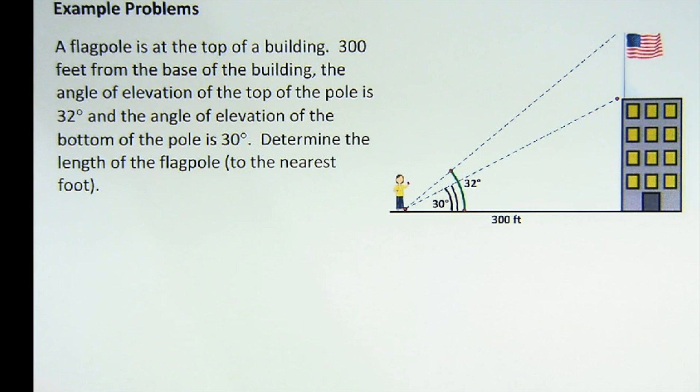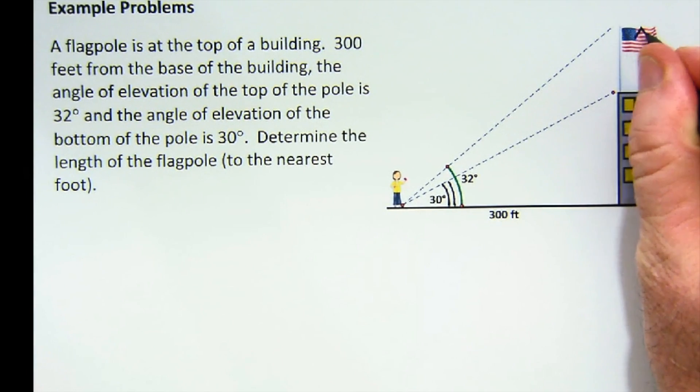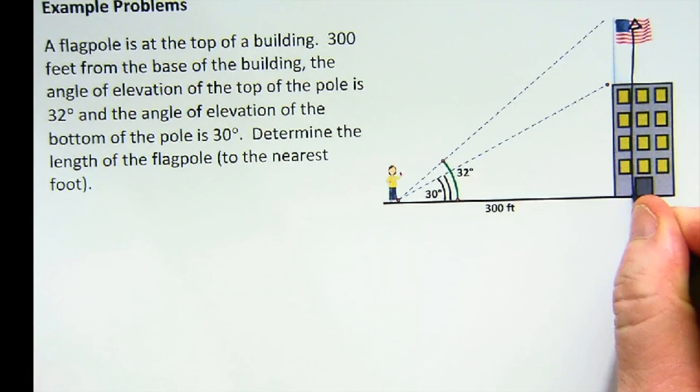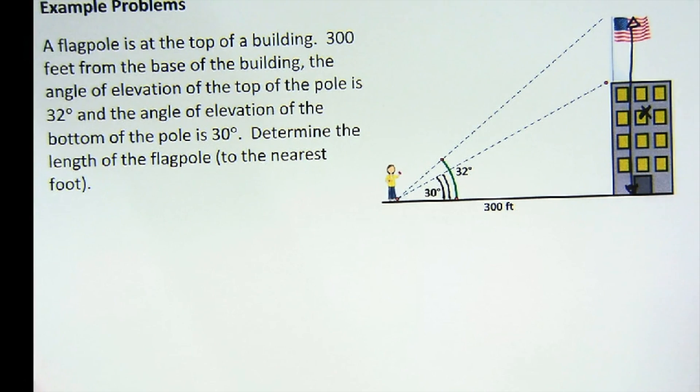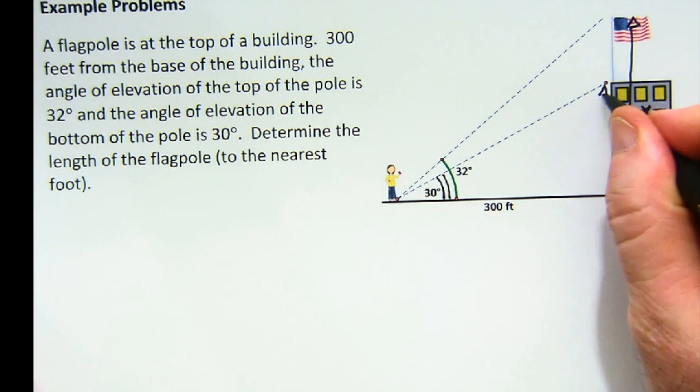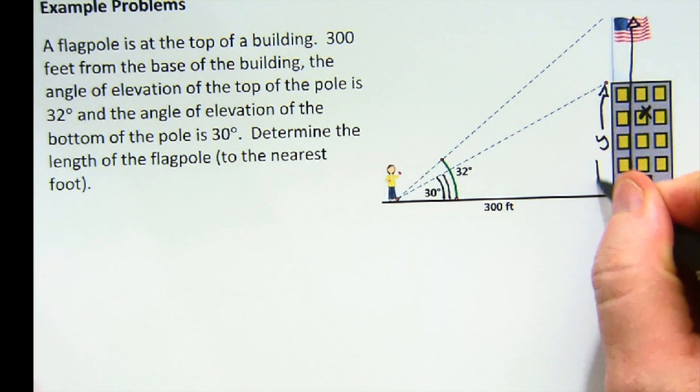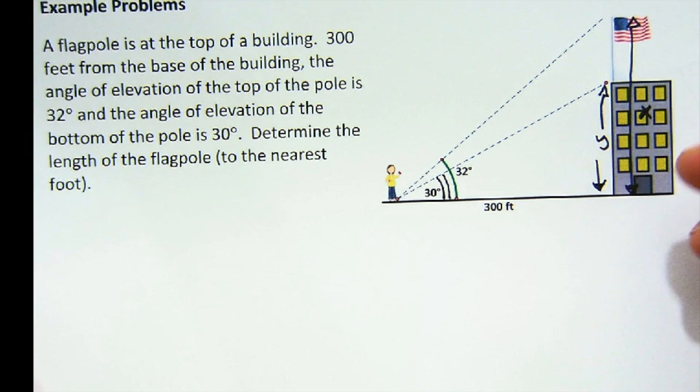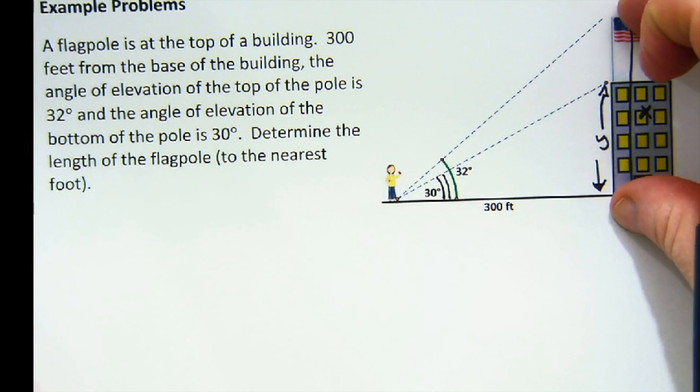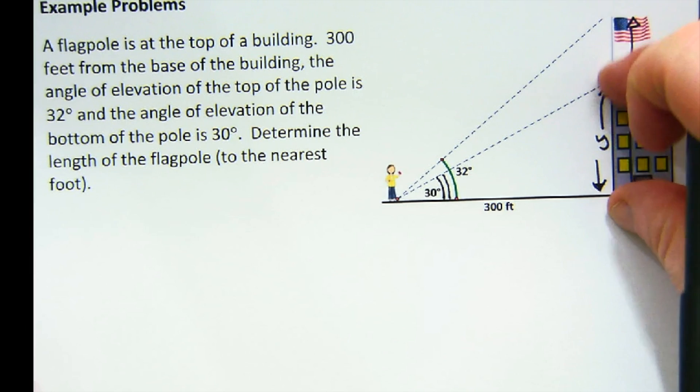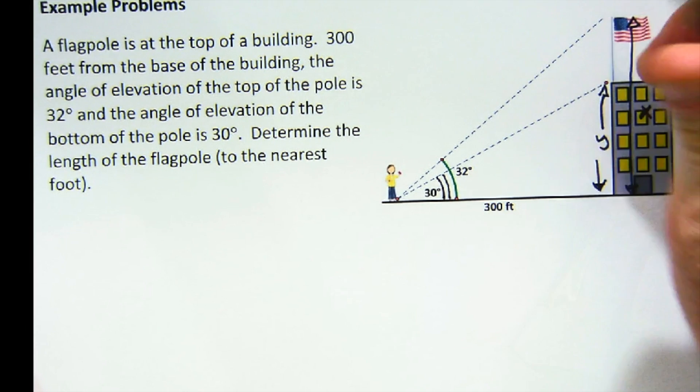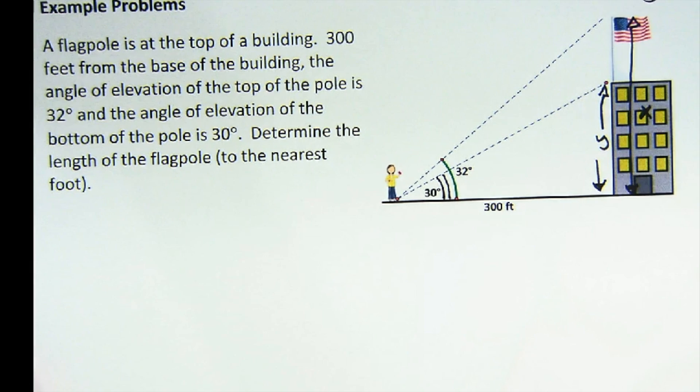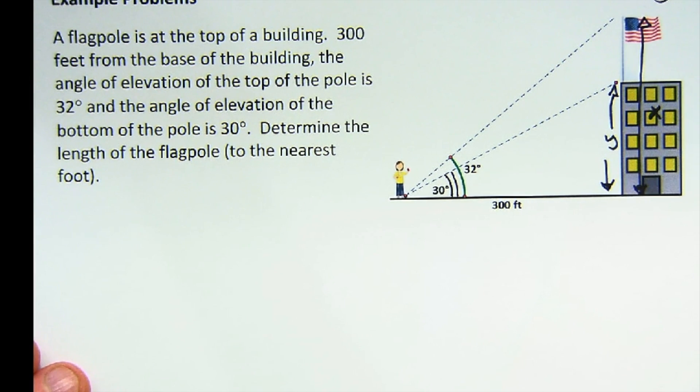The idea is we're going to solve for the entire side here, and let's say that's x, and then we're going to use the smaller triangle, this one, to solve for y. And we're going to, by doing that, we can get this fairly easy using trig, and same with this. And then we're going to subtract. We take x, the full distance, and subtract the y, and we get what's left in the flagpole. Not too bad actually.